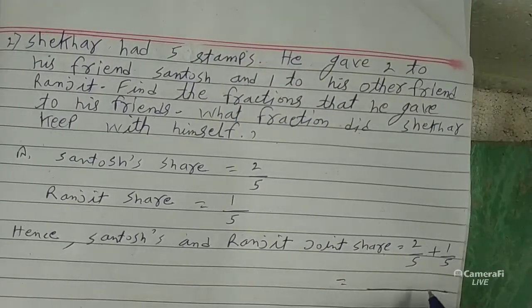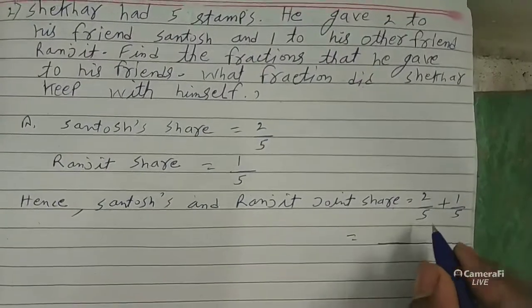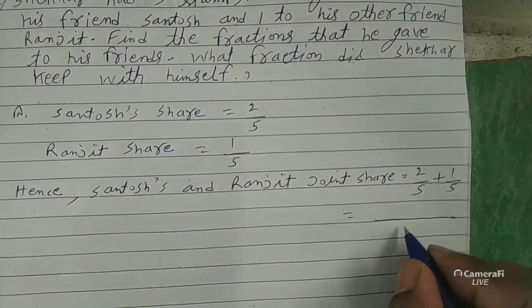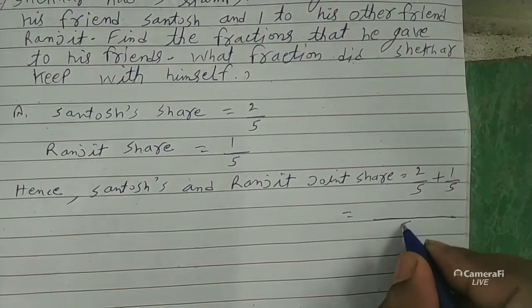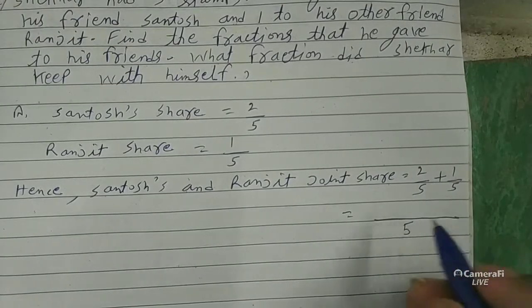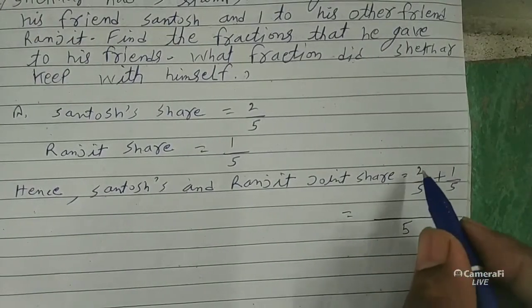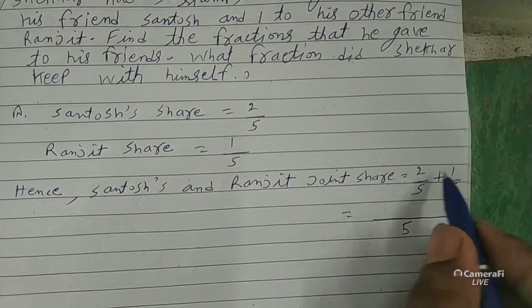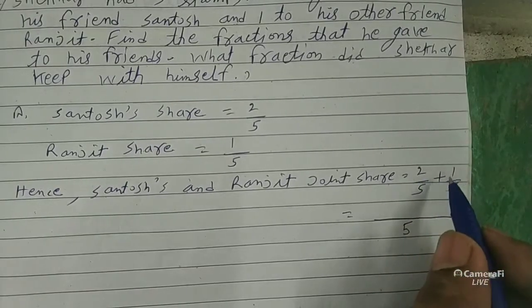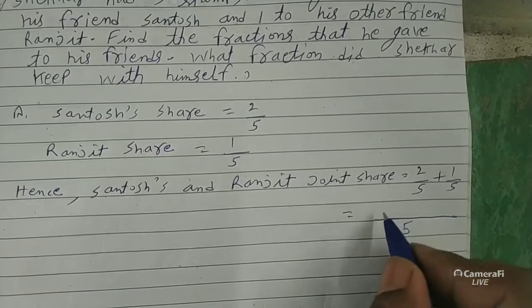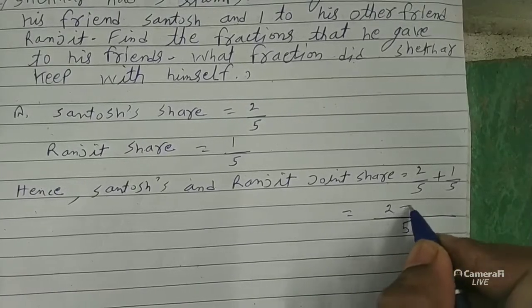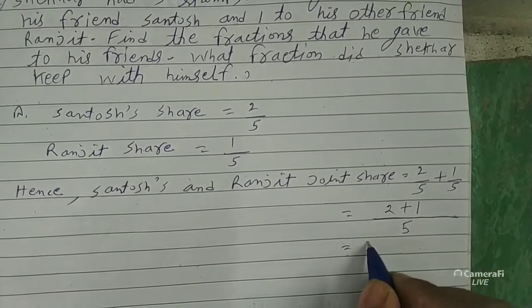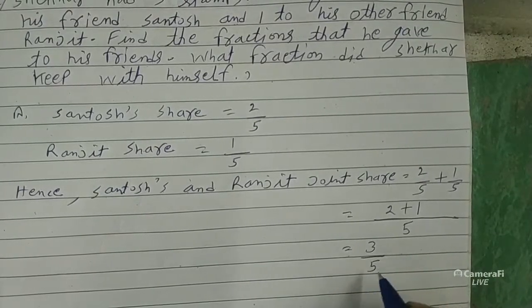The denominator is the same, so the common denominator is five. The numerators are different — put two plus one is equal to 3 by 5. That is the total fraction given to friends.